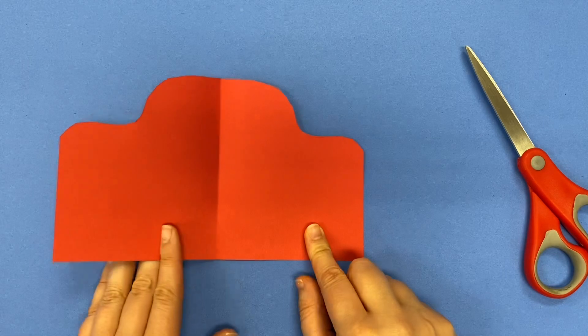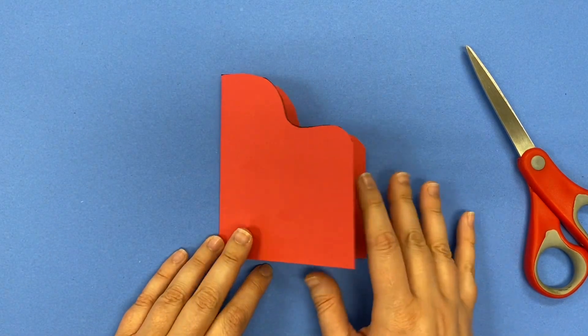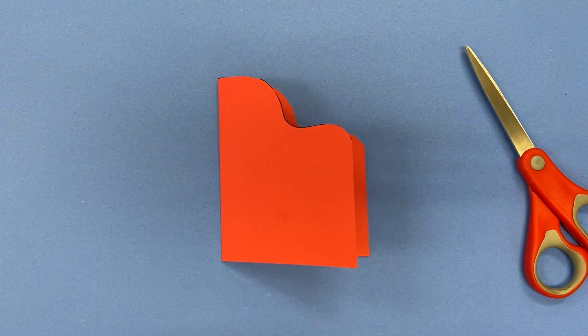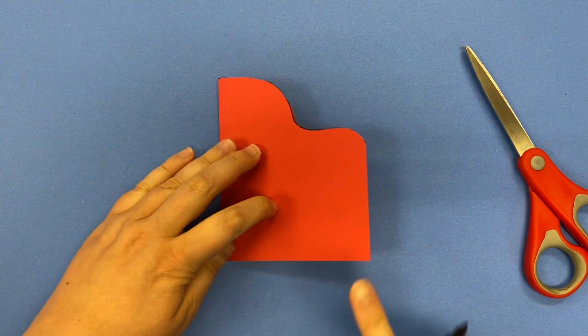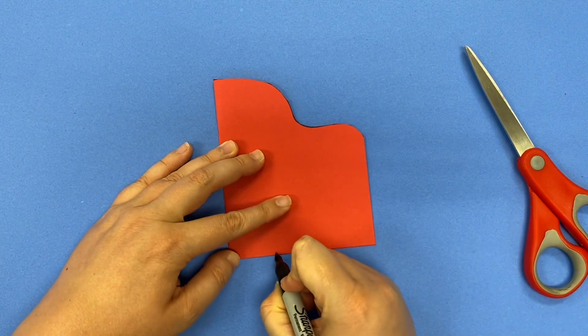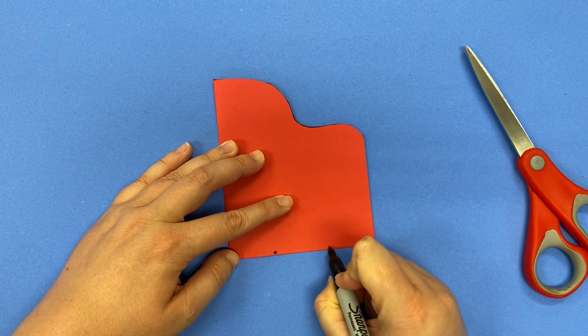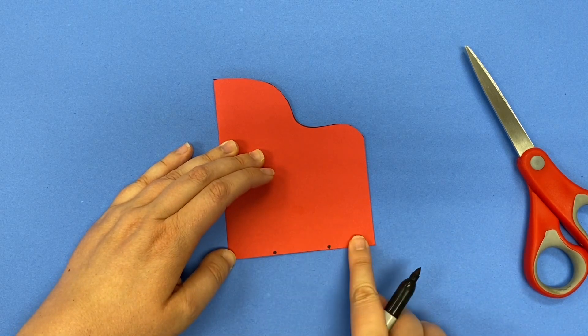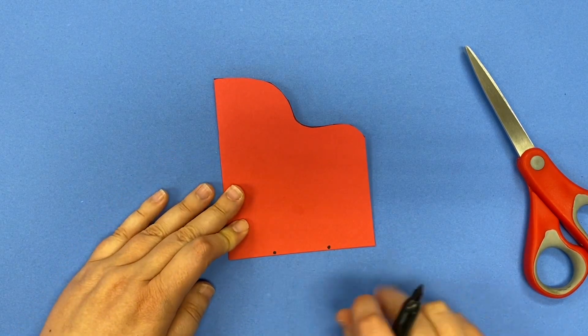All right now I have that line cut on both sides and I'm going to keep my Stabile with the fold on my left hand side still and I'm going to draw two dots along the bottom. So I want those dots to be kind of evenly spaced. You don't want them to be too close together. You want it to be about the same amount of space in between each of those dots.